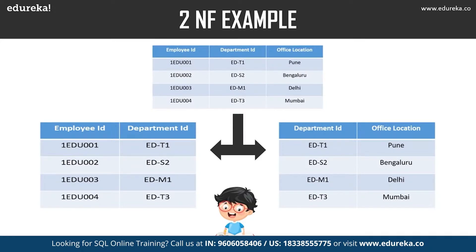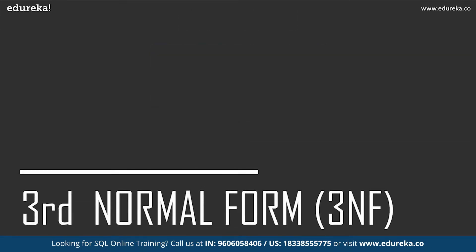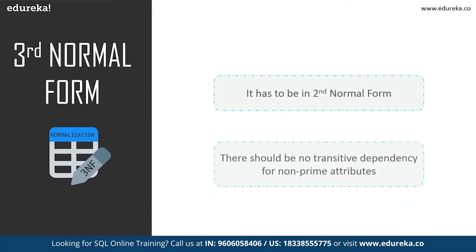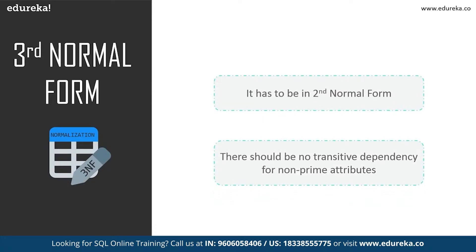Now let's head to third normal form. Third normal form is used to reduce duplication of data and ensure referential integrity. A table must meet two conditions: it must be in second normal form, and no non-prime attribute should be transitively dependent on another non-prime attribute. Simply put: if C is dependent on B, and B is dependent on A, then transitively C is dependent on A — this should not happen. All non-prime attributes must depend only on the prime attributes.